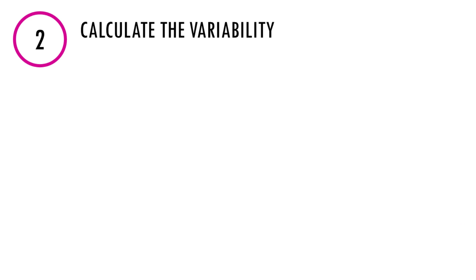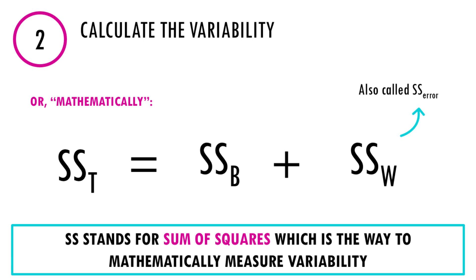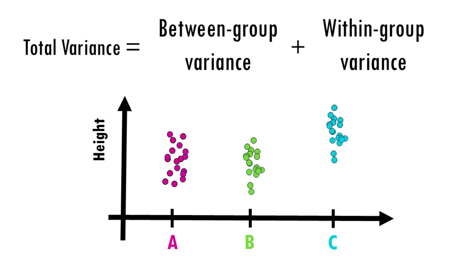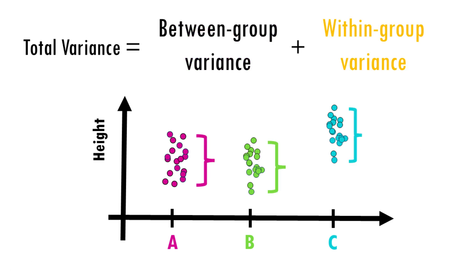Step two involves calculating variability. The core idea of ANOVA is to partition the total variation in our data into two components. ANOVA defines the total variance as the sum of between-groups variance and within-group variance — also expressible as sums of squares. Between-groups variance measures how group means differ from the overall mean: are the group averages far apart? Within-groups variance, also called error variance, measures how individual values vary within each group — variability not due to the fertilizers.